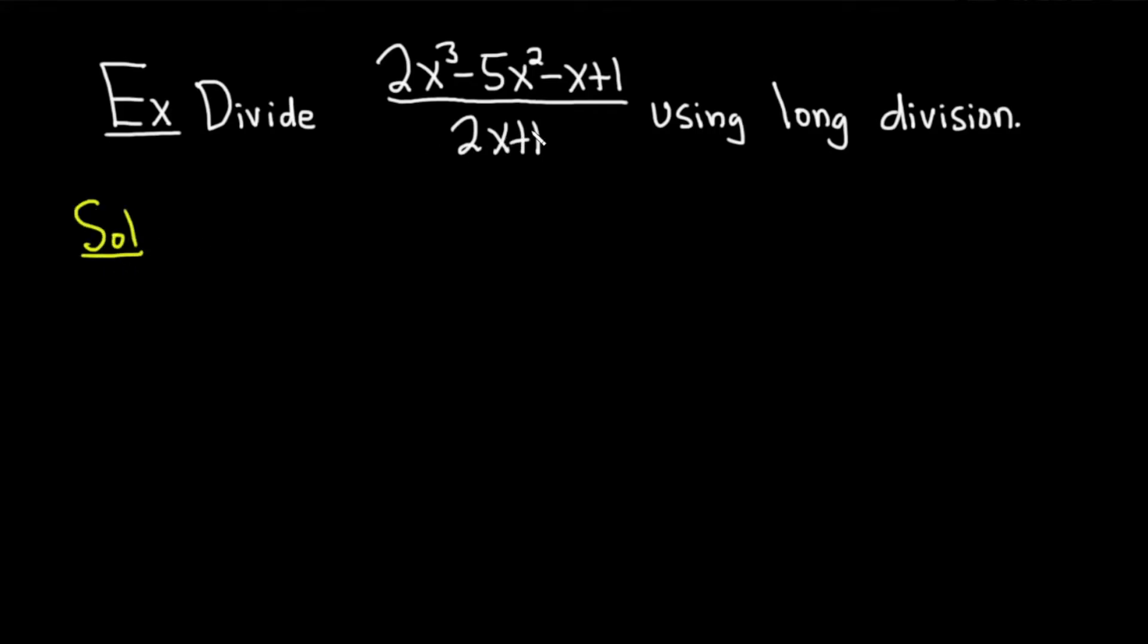So you start by writing down the piece that's on the bottom on the outside like this: 2x + 1. Then you write this symbol. And then the piece that's up top goes inside here. So if you're missing powers of x, then you would put in like a 0x. But we're not missing any powers of x or anything, so all is good.